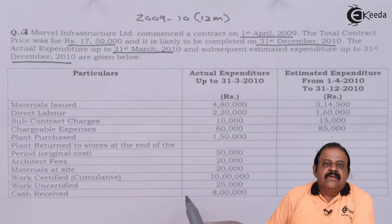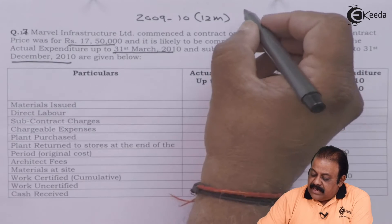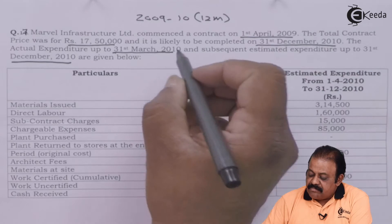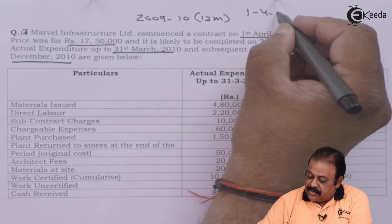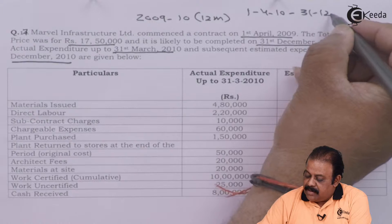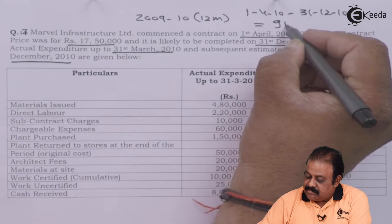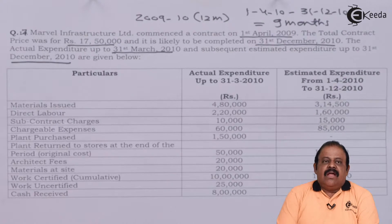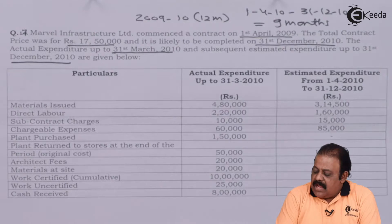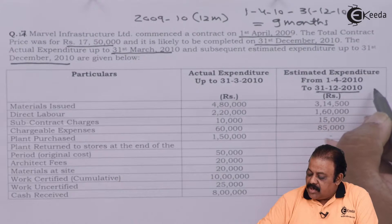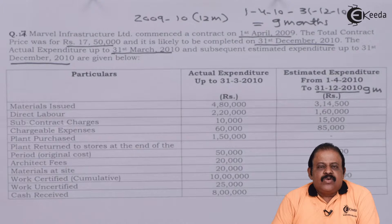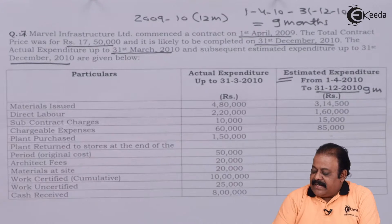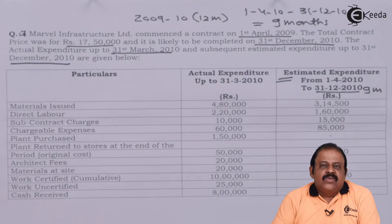The contract covers 12 months of actual expenditure, and then the subsequent period starts from 1st April 2010 up to 31st December 2010, which is a period of 9 months. So in all, actual expenditure is given for 12 months and expected expenditure for 9 months — total contract runs for a period of 21 months. Because of estimated expenditure, we are required to prepare a total contract account or estimated contract account.